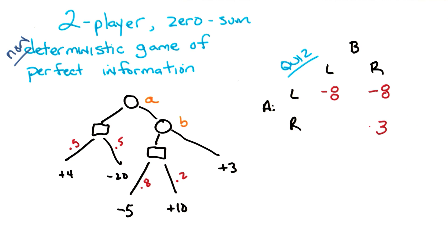And the last thing requires me to do some multiplication. So negative 5 times 0.8 is like negative 4. 10 times 0.2 is like 2, so negative 2.